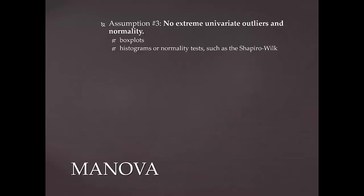However, the MANOVA is reasonably robust to modest violations of normality when the sample size is at least 20 in each cell — as Tabachnick and Fidell tell us. The exception, however, is when normality is affected by outliers.